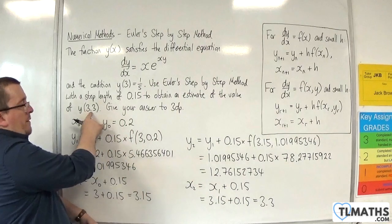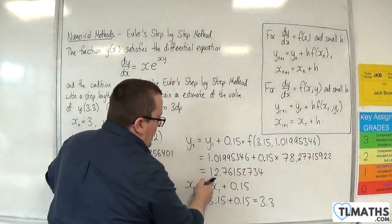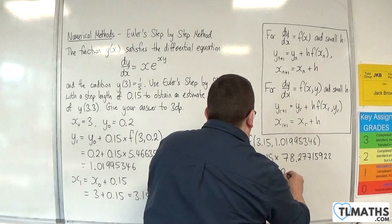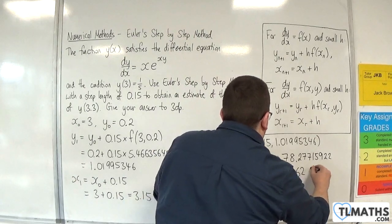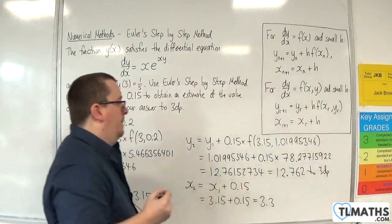Now we want to find y of 3.3, so the x value is 3.3. What's the y value? It's that one there. And I want that to three decimal places. So 12.762 to 3 decimal places.